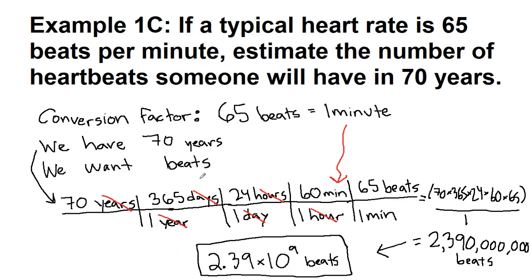Sometimes students will start with 65 beats per minute instead, and that works out just fine. You would have 65 beats per minute, then turn minutes into hours, hours into days, days into years, and multiply by 70 to cancel the years. If you do that, your train tracks look exactly like this one — just written in the opposite direction. The train's going the other way on the tracks, and that works just as well.